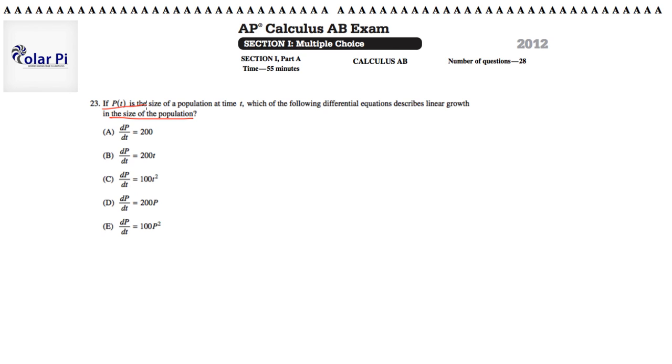So the size of the population was p of t. So whichever differential equation is correct must have an original equation, p of t, that resembles a linear growth, and that would be of some kind like mt plus b, where we're likening it to mx plus b.